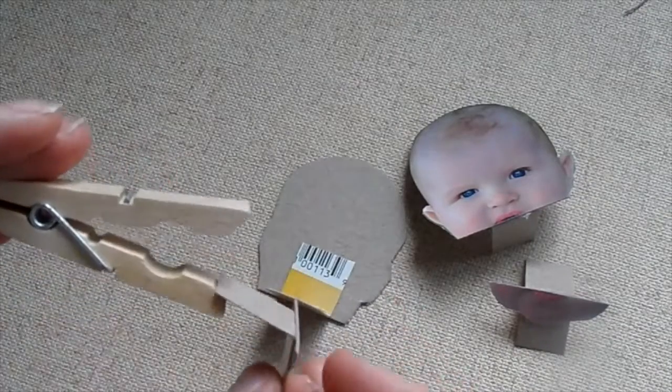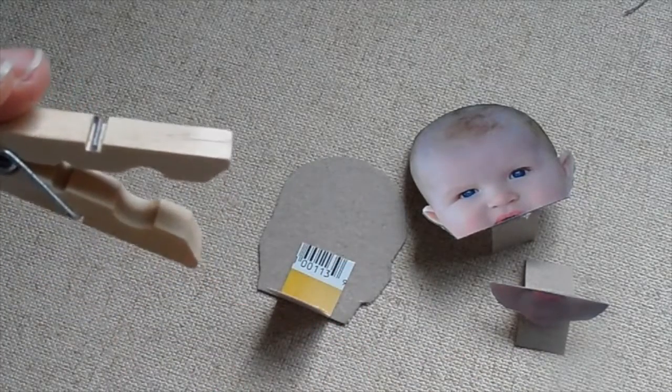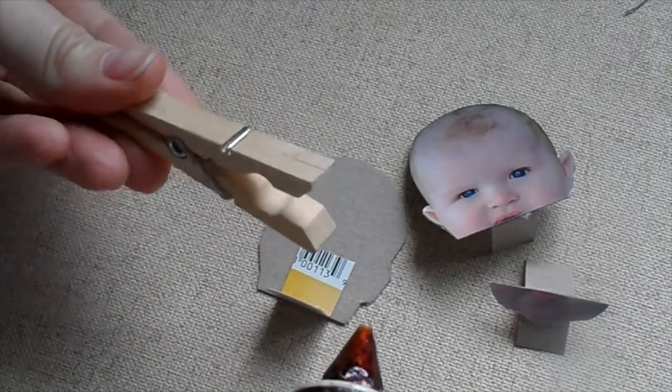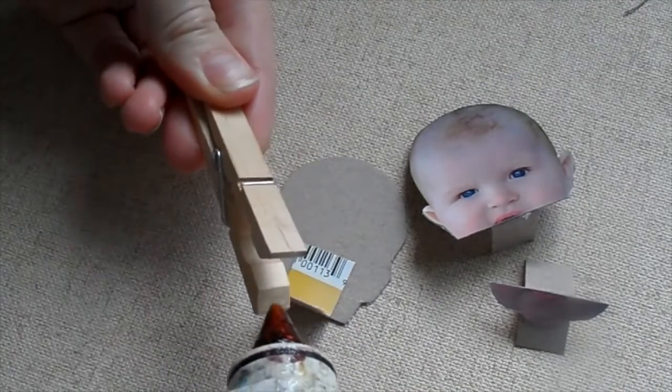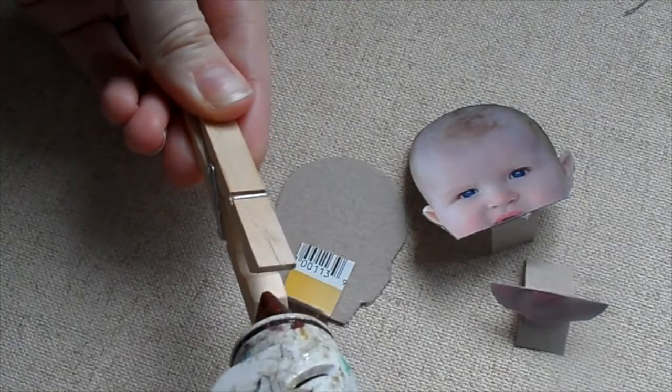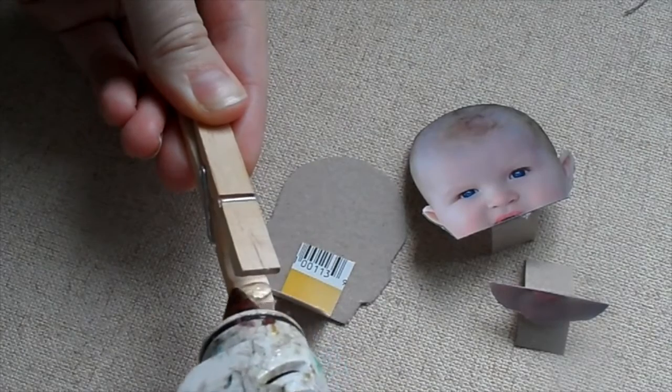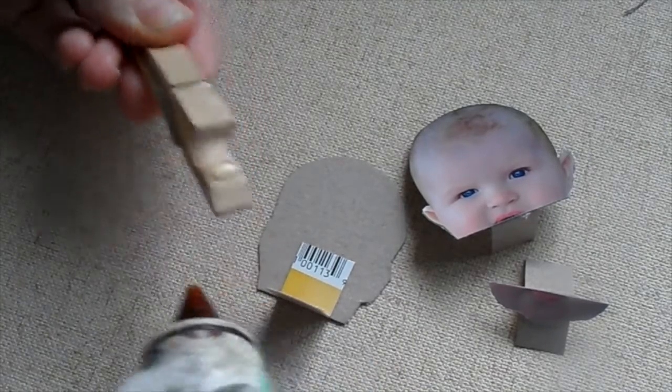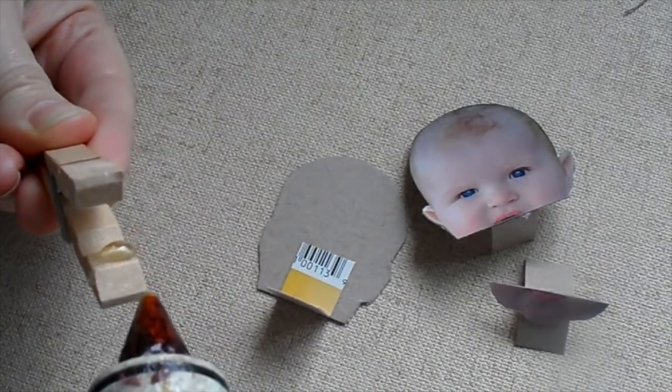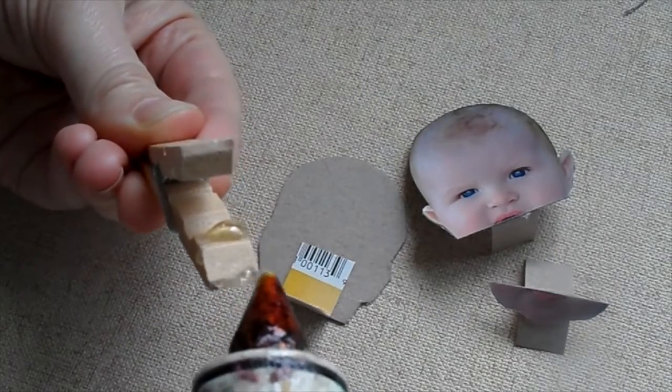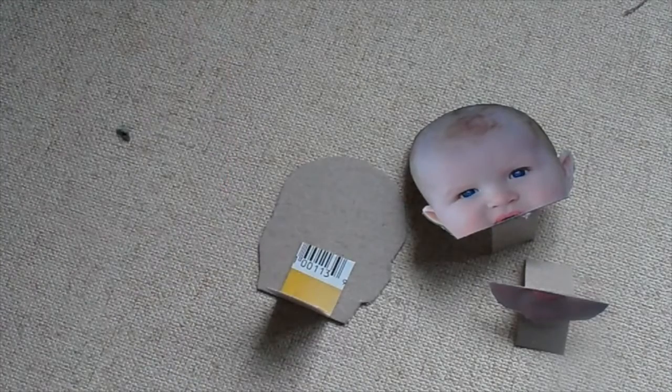Once you know your pieces are going to line up by testing on the clothespin, you're going to want to glue them on. Now, I use glue gun because it's the most durable. When you're squeezing the clothespin open and closed a lot, glue gun is going to be what's going to hold the cardboard in the best. I find putting a little bit on the very end as well as the inside really helps to ensure a really strong bond.